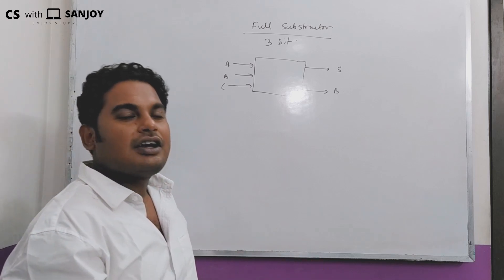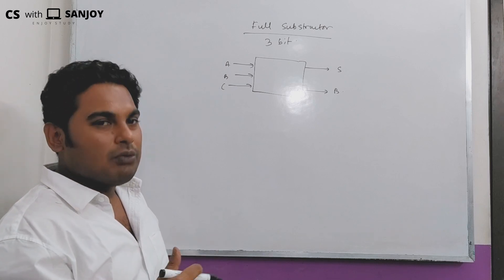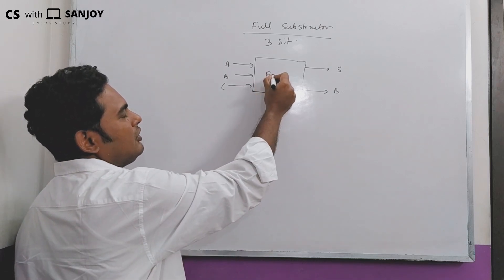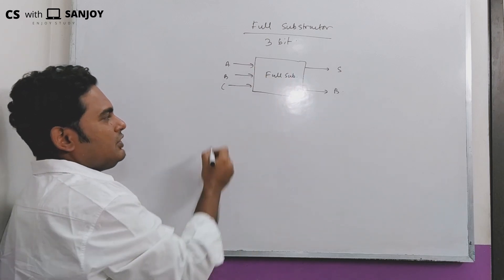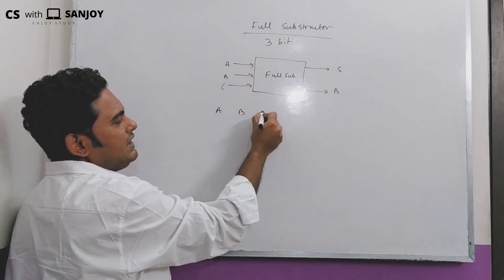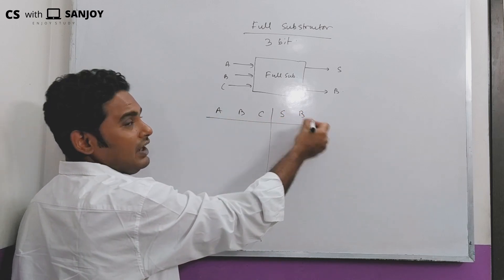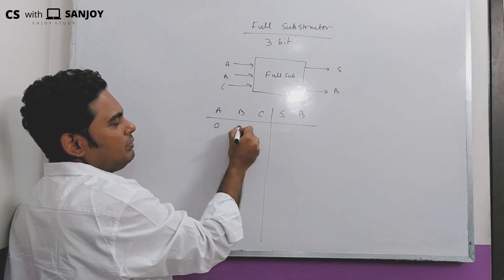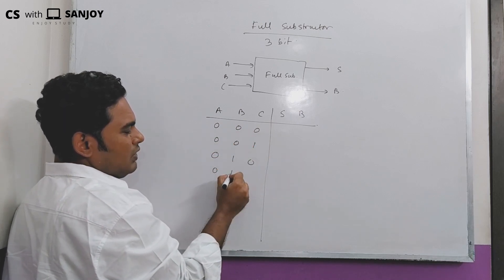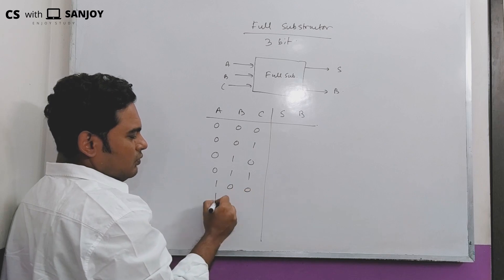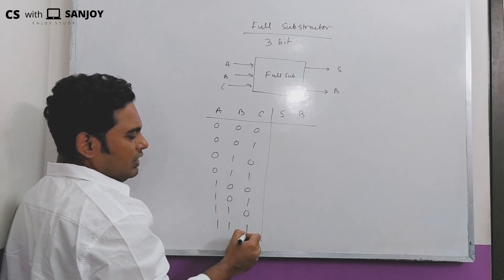We use a 3-bit subtractor combination: 000, 001, 010, 011, 100, 101, 110, and 111.